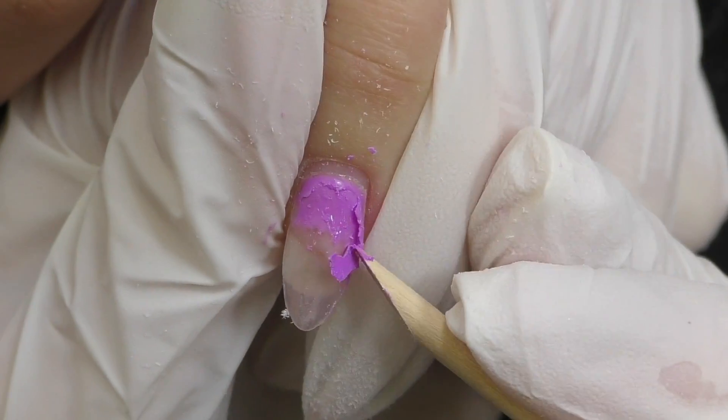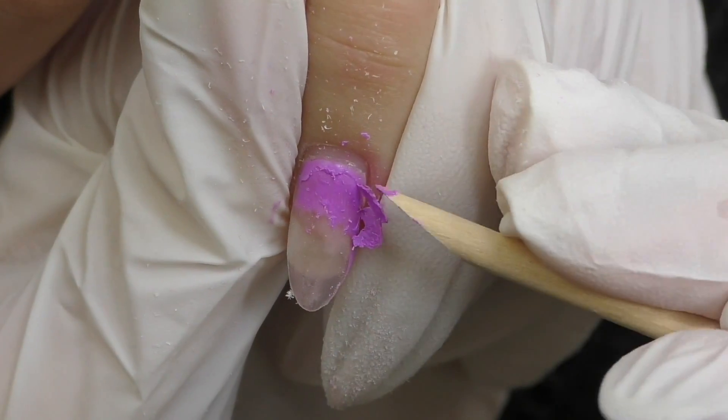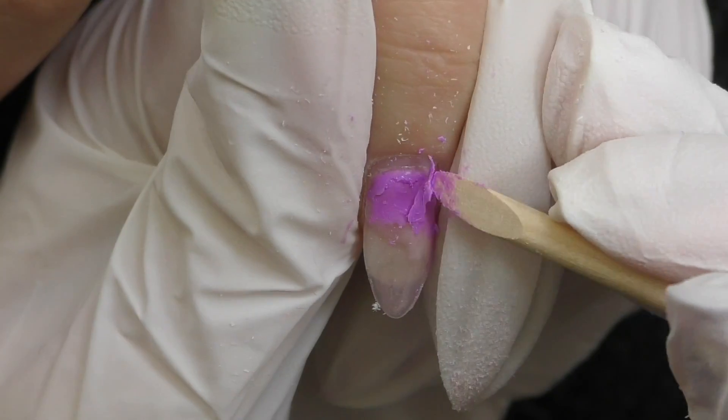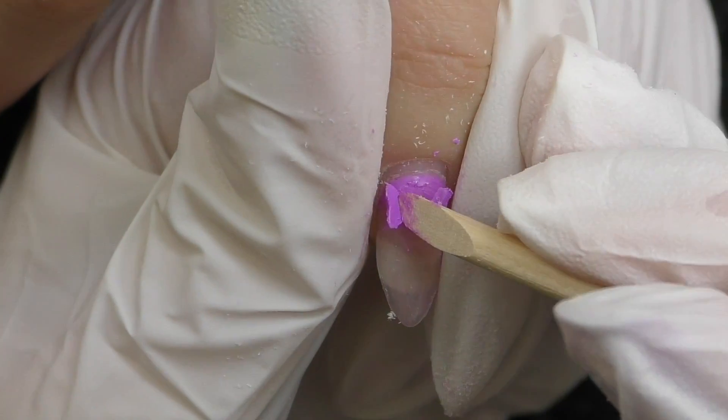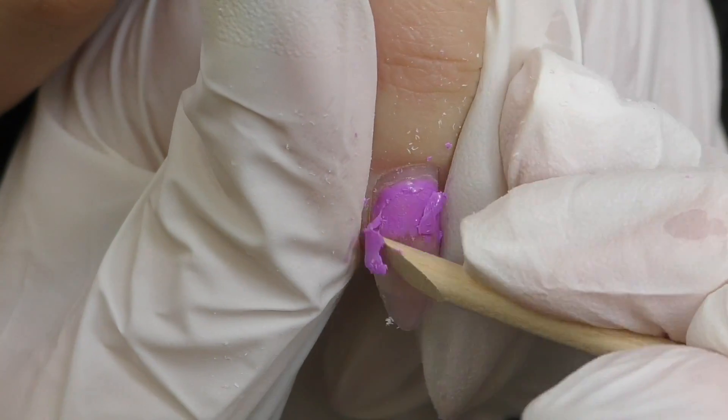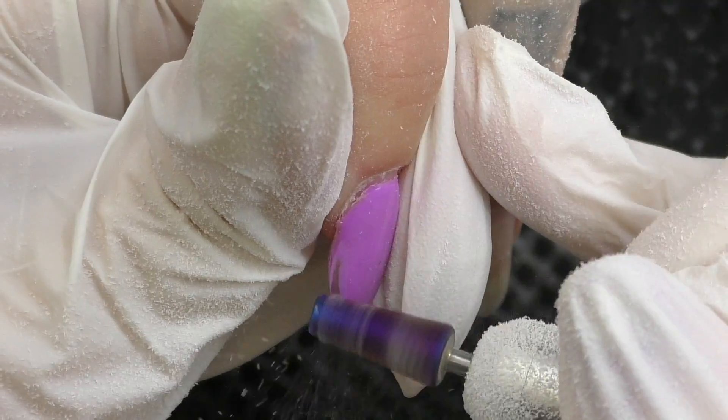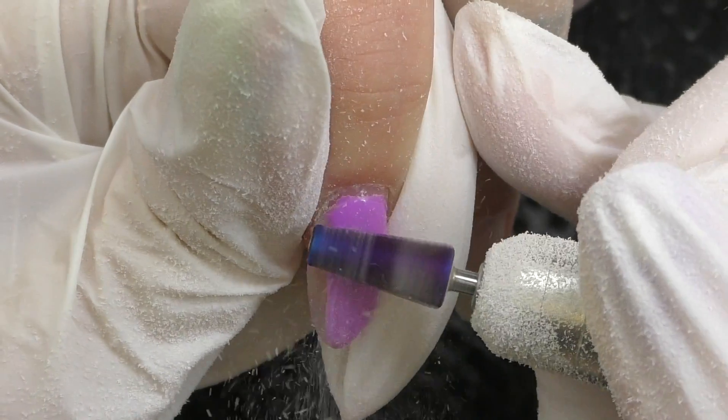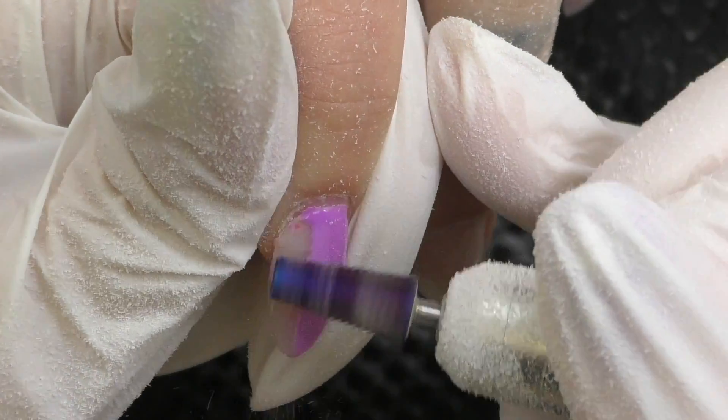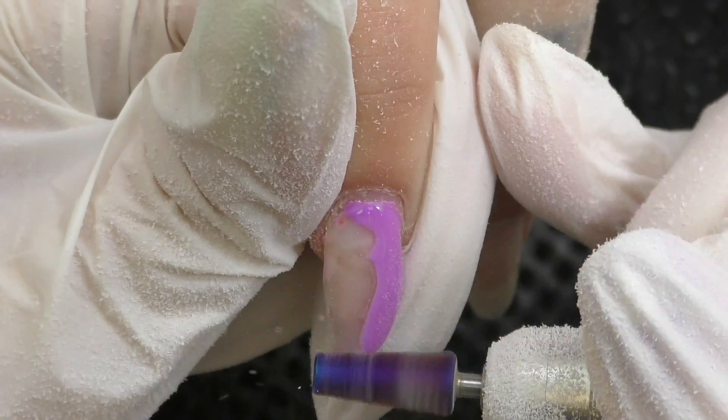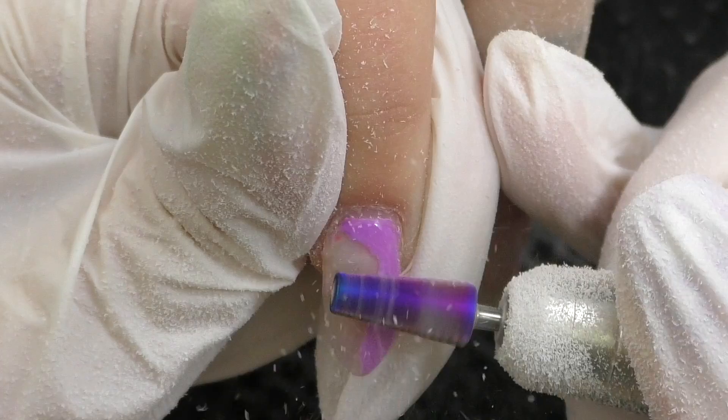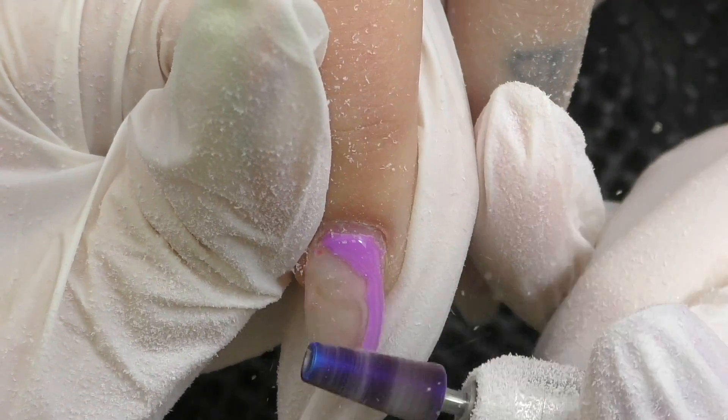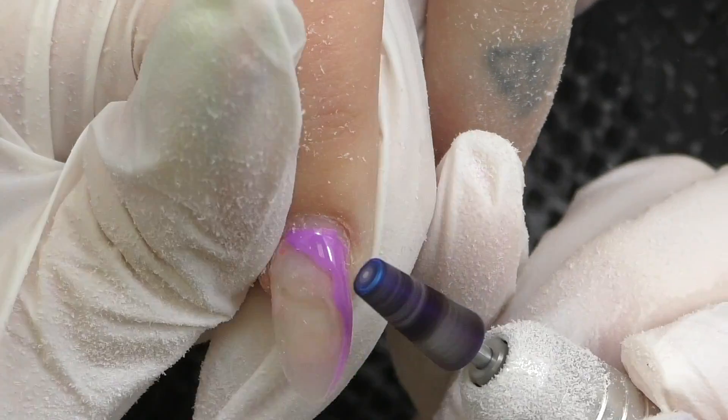My plan is to take off the color so we can see what's going on underneath - is there product lifting, what's the condition of her natural nails? Then we will decide what kind of shape and length to do. I'm using the 5-in-1 Kiara Sky carbide drill bit. This one can be used for both left and right-handed nail technicians.